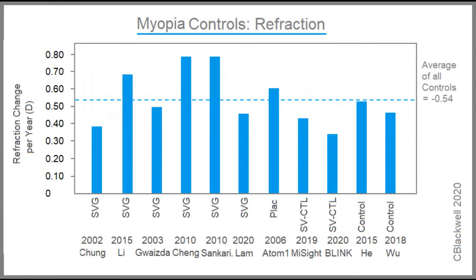Looking at a broader view, these are the controls for each study. The average progress was just over half a diopter per year. By Wang's criteria, a strong effect would essentially neutralize the average yearly progress. Also note there is variability by geographic region.